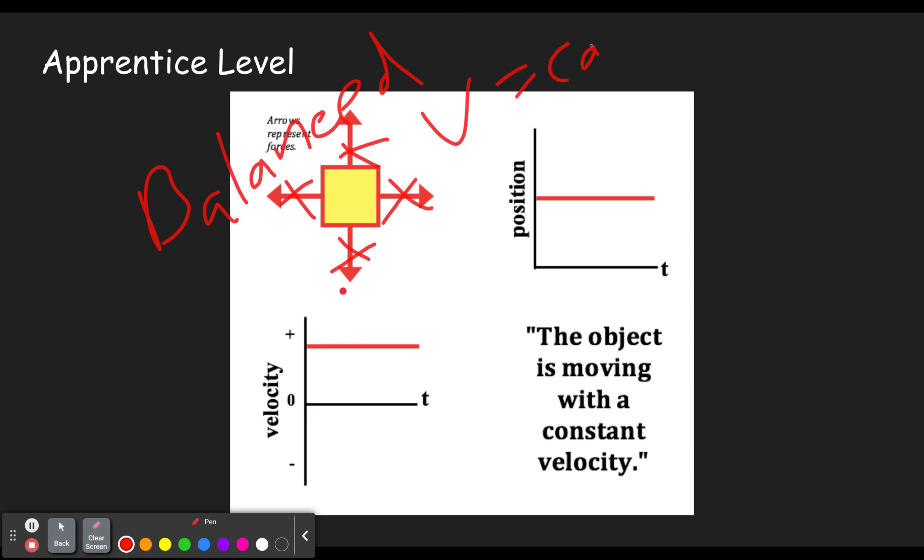That means that the velocity will be constant. V is constant. Now that constant could be zero or it could be something. In the apprentice level, actually, every single one has three things that have a constant velocity.